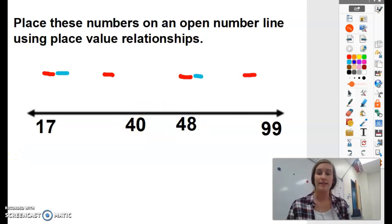So if I needed to write these numbers in order from least to greatest, I would say 17, 40, 48, 99.